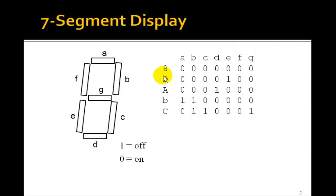C, we just turn off B, G and C. Make a C. D, well again, we can't put an uppercase D. It looks like a zero. So we'll make a lowercase D like this by turning off A and F. So A and F are off.